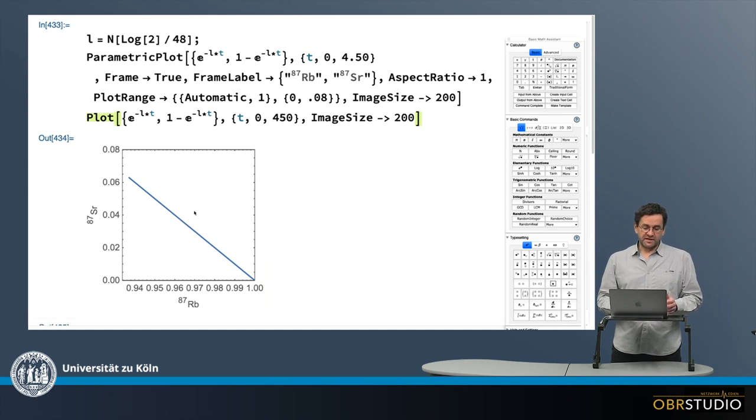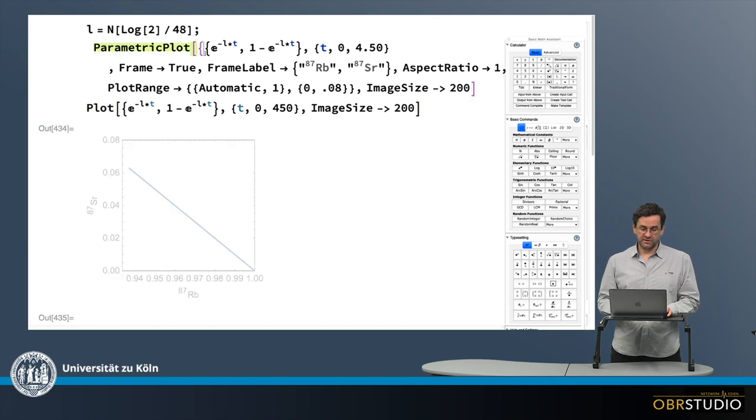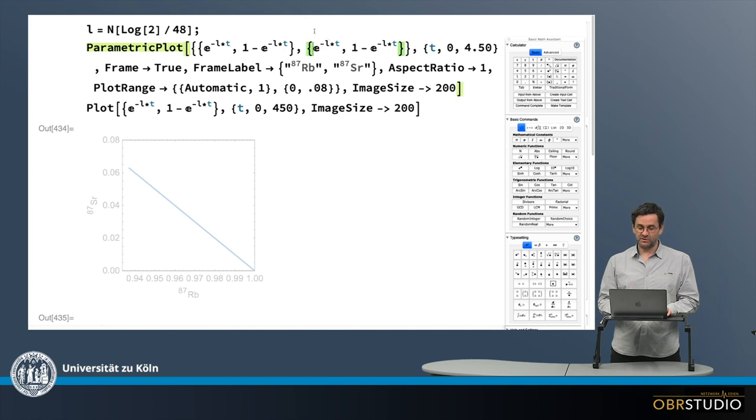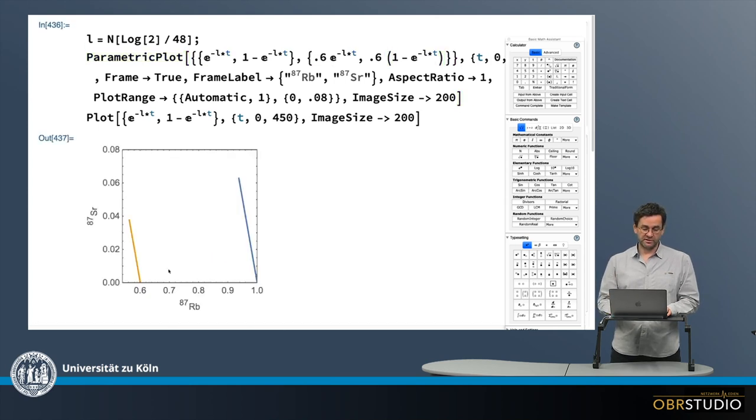Now I'd like to add a second rock with a different initial rubidium 87. So currently the initial is basically 1 here, but this is why we don't need 1 in front of there. But now I want a second rock with less initial rubidium 87, maybe only 0.6 of the other rock. I also need to do this to calculate the strontium, of course, because there is now less rubidium. And then I plot this here and then I have two evolution lines of the two minerals or the two rocks.